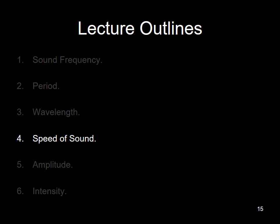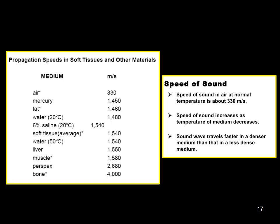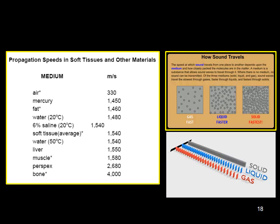The fourth point in this lecture is dedicated to the speed of sound. The speed of sound is the rate at which a sound wave travels or propagates in a medium along a given line or direction. The density and compressibility of a medium influence the speed of sound. Density is defined as the mass of a medium per unit volume, and the ease with which a medium can be compressed is referred to as compressibility or elasticity. The image attached to this slide clearly demonstrates how sound travels through various mediums.